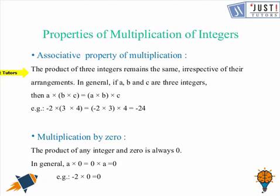So in general, let's take three integers a, b and c, and let's take them as minus 2 times 3 times 4. So in both the cases, answer is going to be minus 24. So this is how associative property holds in multiplication.